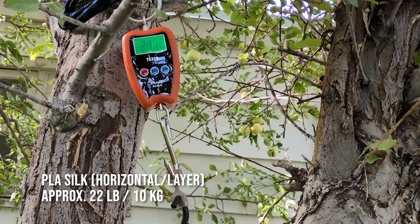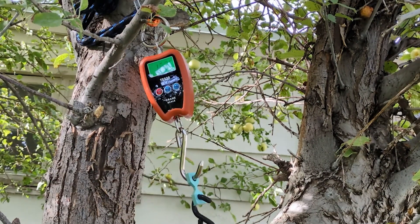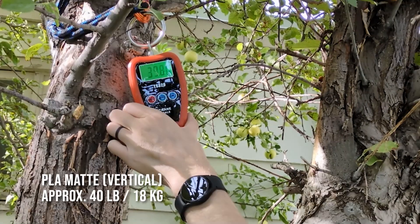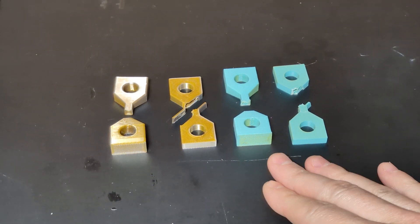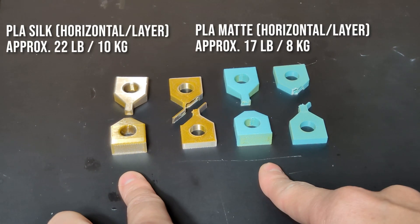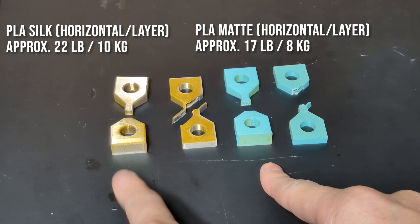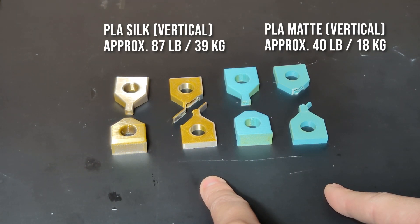Okay, so actually the results of this were quite surprising. It would appear in general that the matte version is a little bit weaker. Just going off of the layer adhesion on these two, with the silk it broke at about 22 pounds and with the matte it broke at about 17 pounds. On the overall other direction, the silk broke at about 87 pounds and the matte broke at only about 40 pounds.